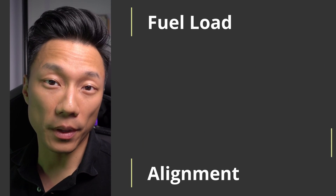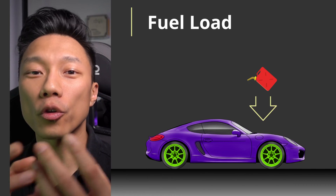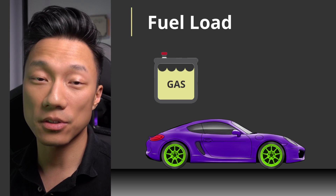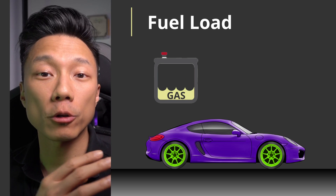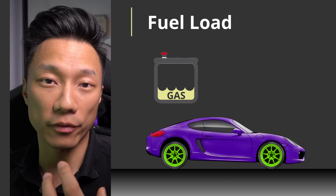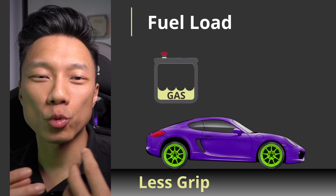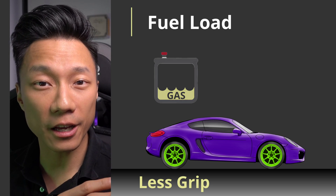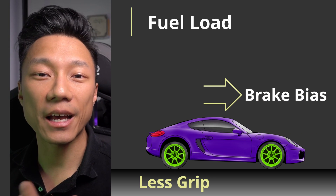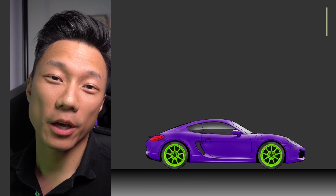Fuel load is a big and common one. Most cars will have a fuel cell either in the front or the back of the car. Let's take a car with a fuel cell at the back — as the stint progresses and you burn off more fuel, the rear of the car will get lighter and lighter. As the rear gets lighter, the rear tires have less and less grip. So if you don't change your brake bias through the stint, you will be overbraking the rear tires. What you want to do is ideally move the brake bias forward as you burn off more fuel.